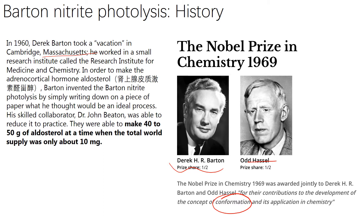他说去度假，当然顺便在那做了一点工作。他想要做一个肾上腺皮质激素，这样一个叫做醛甾酮的东西——有权有载有纯的东西。巴顿发明了这样一个反应，发明的过程非常不可思议：他仅仅是在一张纸上从理论上讨论了一下，觉得可以，就把它画在了一个纸片上，draw down on a piece of paper。